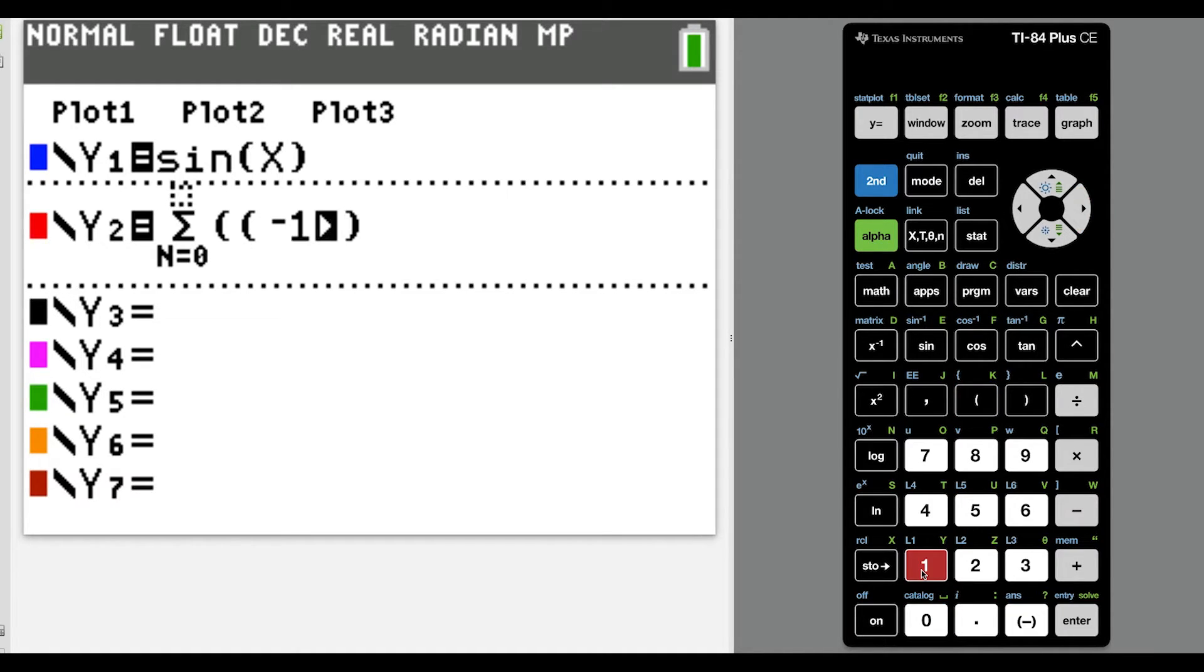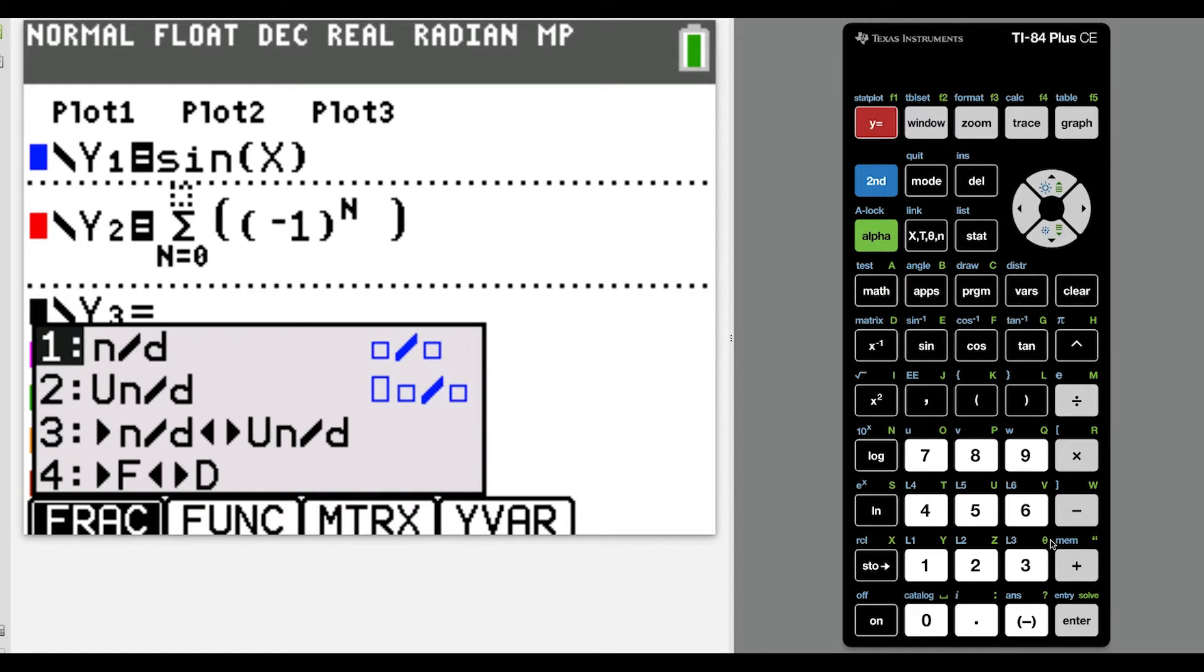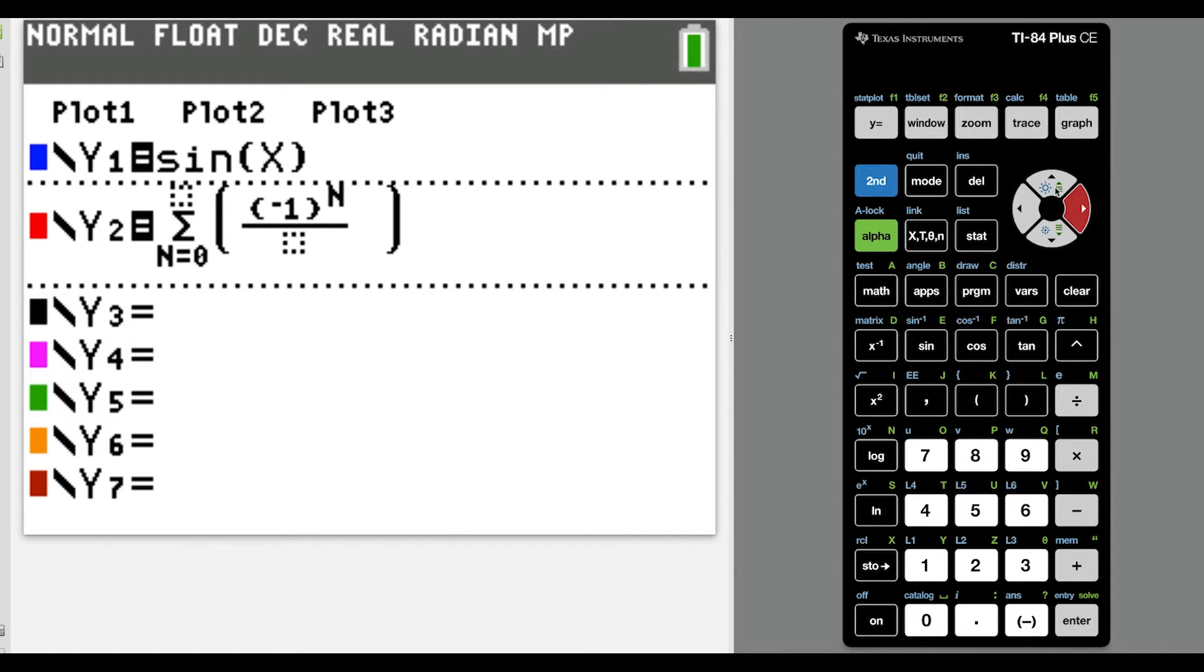the McLaurin series for sine of x, we have negative 1 to the n power. So that's alpha log again. And now the fraction, we hit alpha y equals enter to make a fraction. And what we have, let's just make sure we write this in the right spot.